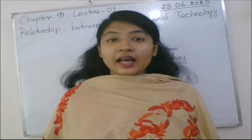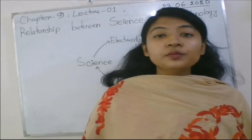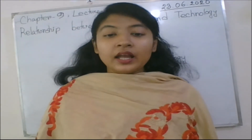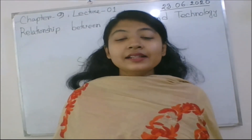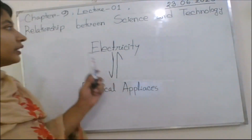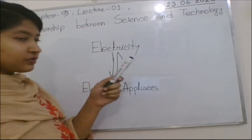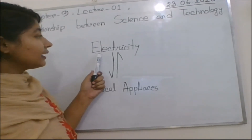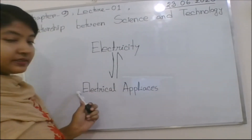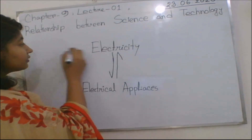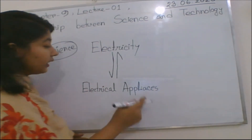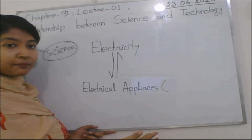On the other hand, scientists use science knowledge to create new products and tools to improve human life — and we know this as technology. So it can be said that science and technology have a strong interconnection. For example, gathering knowledge related to electricity is pure science, and using electricity to invent different types of electrical appliances is technology.